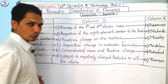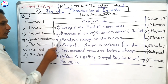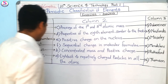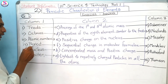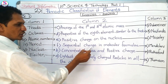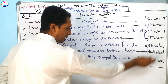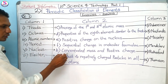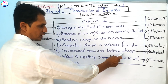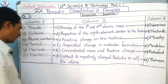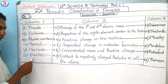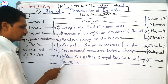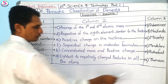Properties of the eighth element similar to the first is about Newlands' octaves. Atomic number as positive charge on the nucleus is given by Henry Moseley. Sequential change in molecular formulae is by Mendeleev. Nucleus as concentrated mass and positive charge is given by Rutherford.